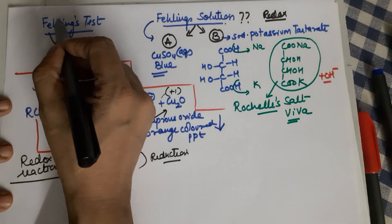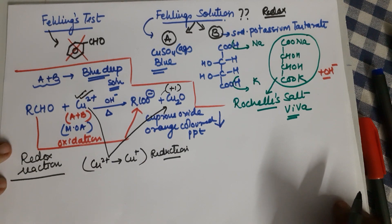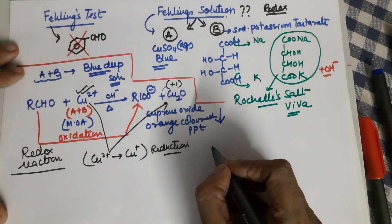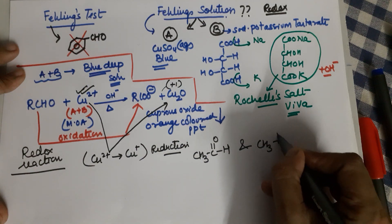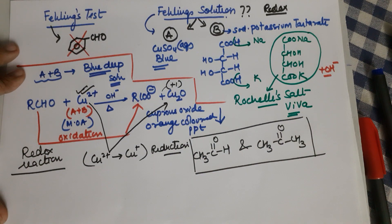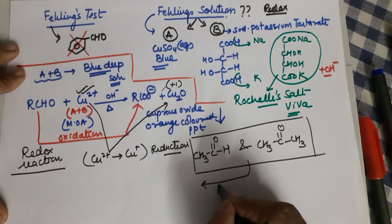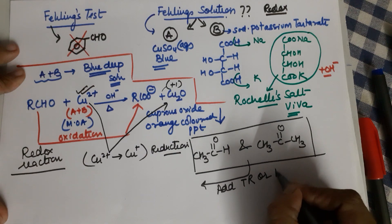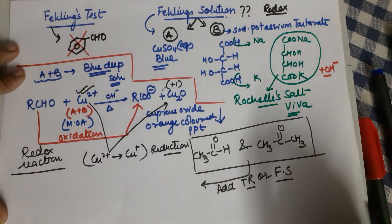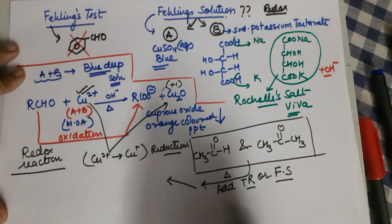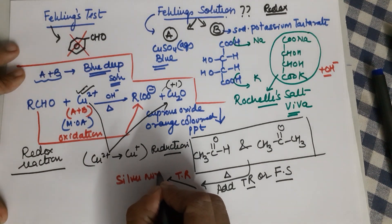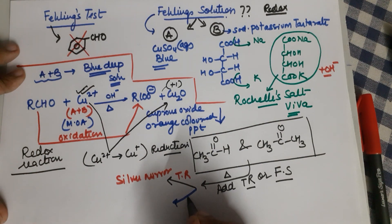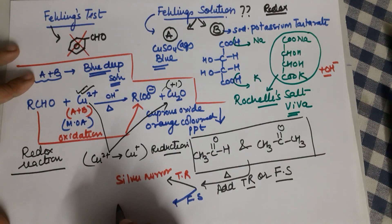Remember, Fehling test cannot be used for aromatic aldehydes because it is not as strong an oxidizing agent as Tollens. For example, if you are given acetaldehyde and acetone in two different test tubes and asked for a chemical test to distinguish them, you can add either Tollens reagent or Fehling solution and heat. With Tollens reagent you would get a silver mirror formed, and with the Fehling solution — which is blue in color — you would get an orange precipitate.